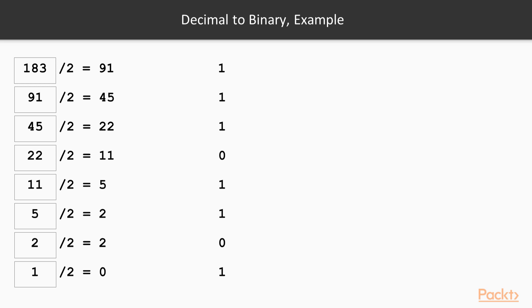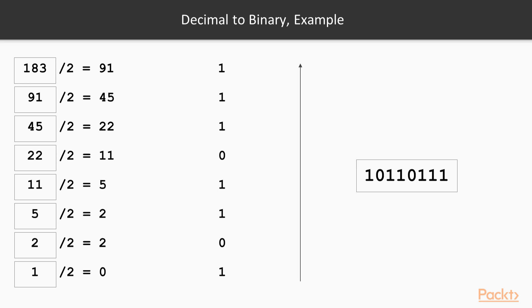When we finally get to 1, we do a final division, which gives us a remainder of 1. When the answer is 0, we stop. If we then read our remainder list from bottom to top and place it in a string, we have our binary number.